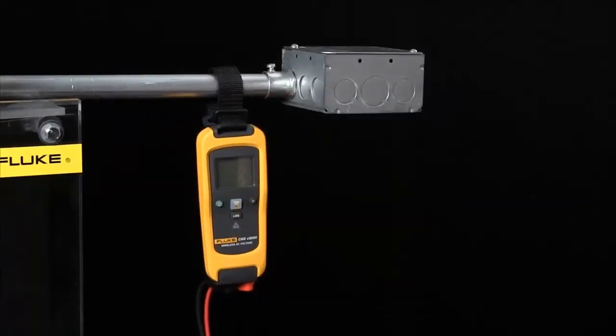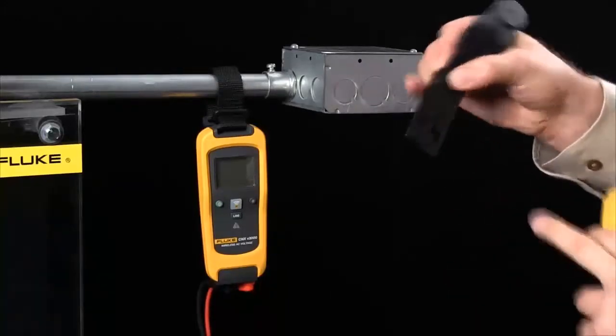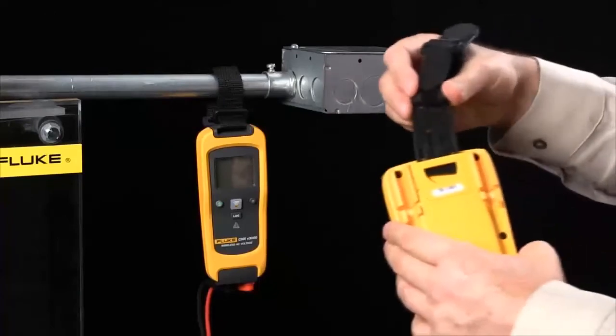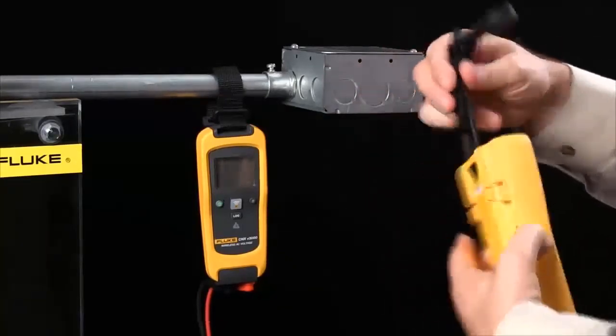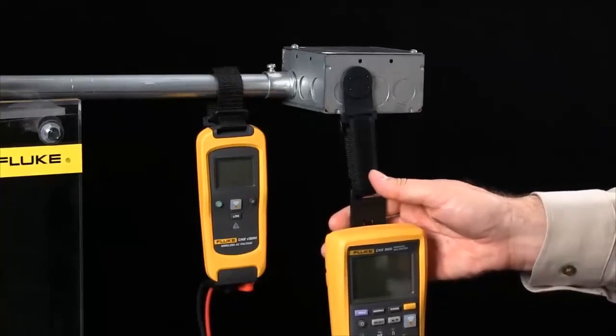Also recall that the TPAK system will work with any Fluke meter. We include this plastic piece with every single kit. Simply snap it into the back of any Fluke multimeter and now you do have the ability to use hands-free operation.